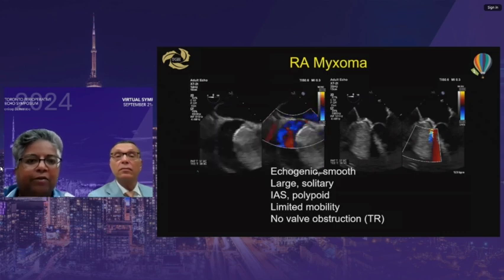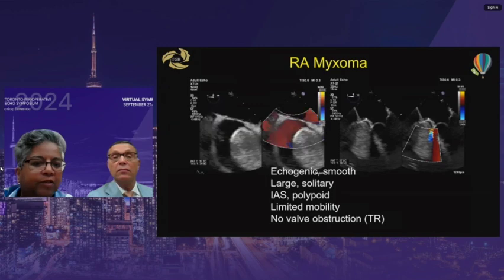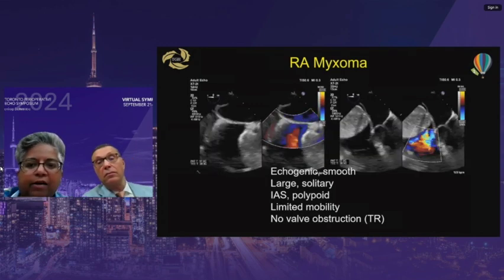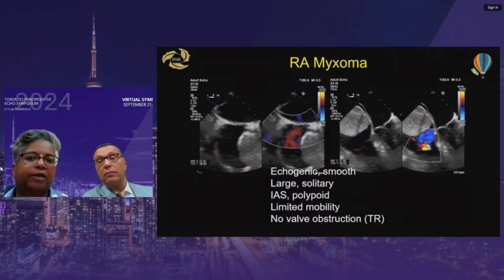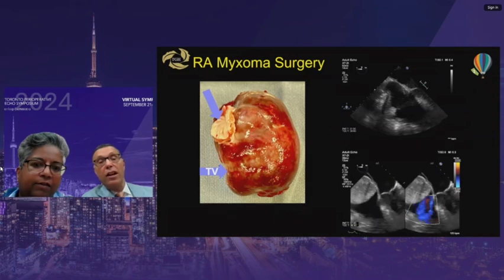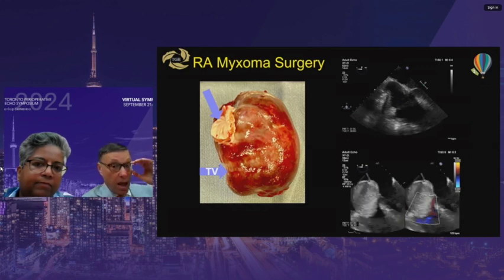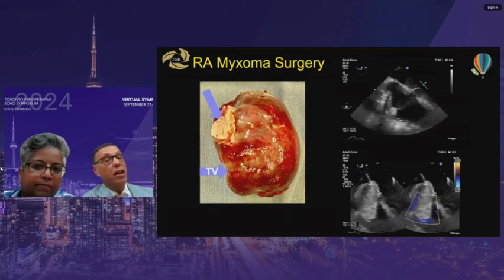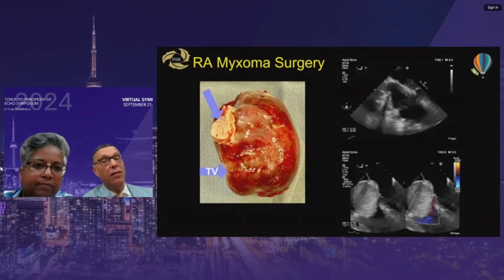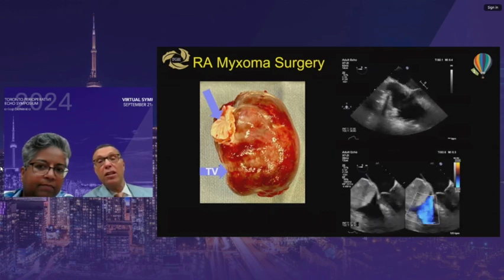This is a right atrial myxoma — pedunculated, sitting off the interatrial septum, smooth, large, and solitary with limited mobility. It's causing some tricuspid regurgitation rather than significant obstruction. An important behavioral clue: myxomas typically arise from the interatrial septum — when a tumor arises from the free wall instead, that suggests it may not be a myxoma. The post-op image shows the tricuspid annulus was tightened. You can see how the annulus was stretched by the gradually growing tumor.